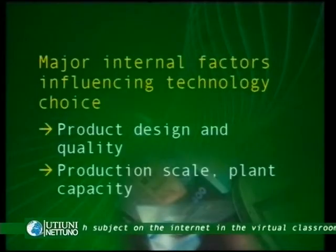Production scale and plant capacity. The production scale — the volume that we might produce in a certain time span — is crucial for the choice of specific technology. We might switch from mass production to individual production considering the scale we're facing. So not just the product design, but also the scale and the plant capacity that we have engineered in our technical analysis.